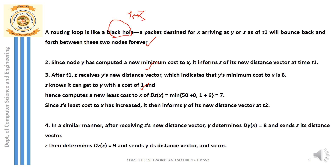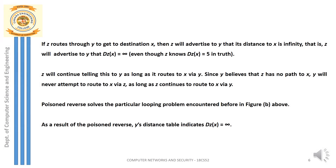This is how this particular problem is dealt with. Poison reverse is the solution given for this looping problem, and as a result, infinity is what gets circulated.